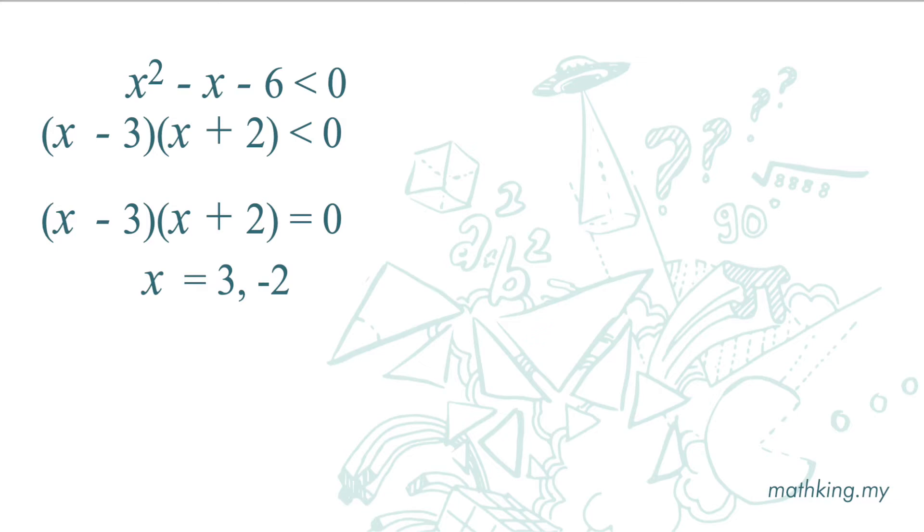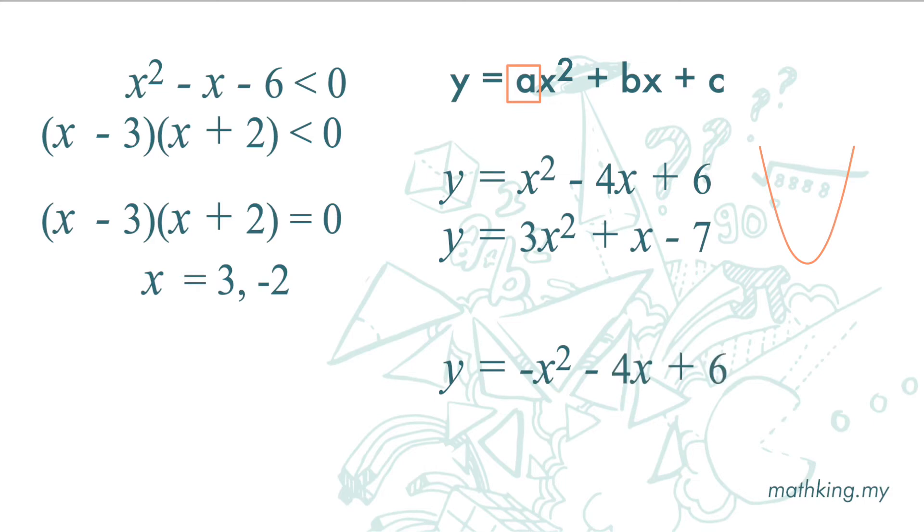Now, we want to sketch the graph. The general form of a quadratic function is y equals ax square plus bx plus c. If the value of a is positive, for example x square minus 4x plus 6, or 3x square plus x minus 7, the shape is like this. If the value of a is negative, for example negative x square minus 4x plus 6, or negative 5x square plus x minus 7, then the shape of the graph is like this.